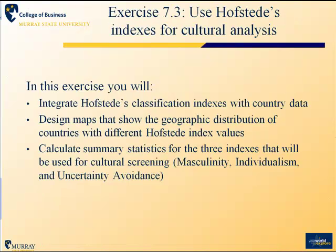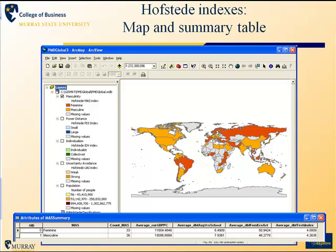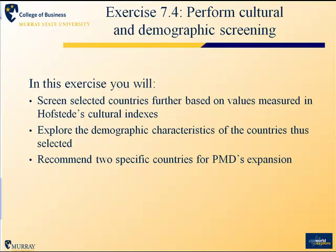Then in step three you will add to the demographic screening, screening based on Hofstede's cultural indices. You'll look at how those classifications vary across countries, design maps showing what countries in the world have different values for the Hofstede indexes, and calculate summary statistics for countries with different values for three of those characteristics. Here's what a map will look like that displays the difference between feminine and masculine oriented countries around the world, and at the bottom of the screen the table illustrates the differences in socioeconomic characteristics of countries that fall into those two categories.